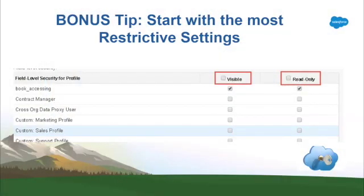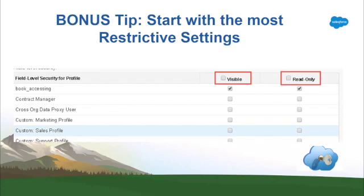Now it's time for the bonus tip: start with the most restrictive settings. When setting up profiles for users, you select what actions users can take with objects and fields. If you're not sure what a profile needs to access exactly, start with the most restrictive settings. For example, if a user doesn't need to access a certain field on the account object, just hide the field — don't mark it as visible. If they can see the field but not edit it, mark it as read-only. Apply the same concept for objects and other profile settings. When you grant users more permissions than they need, they're probably going to mess something up and you'll have to clean it up. Start restrictive, and if they need more accessibility, give it to them. This is actually a best practice when it comes to security.